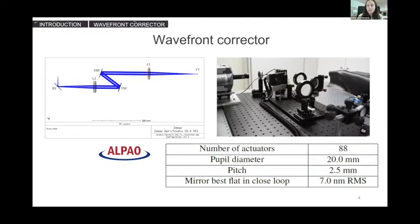I will start with the wavefront corrector. A design as simple as possible using commercial achromatic doublet, the collimating lens image, the entrance pupil on the DM, and then a second focus lens. The relationship between the focal length is one-to-one to avoid generating magnification. In the near future, this compact design allows to incorporate a tipped mirror along the optical path. In this case, we have reused the DM from the previous project. It is from Alpao with 88 actuators.